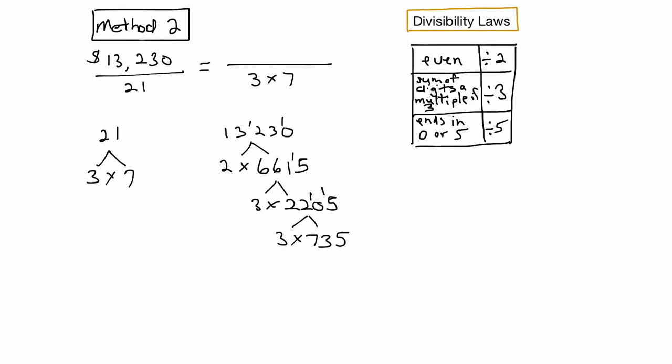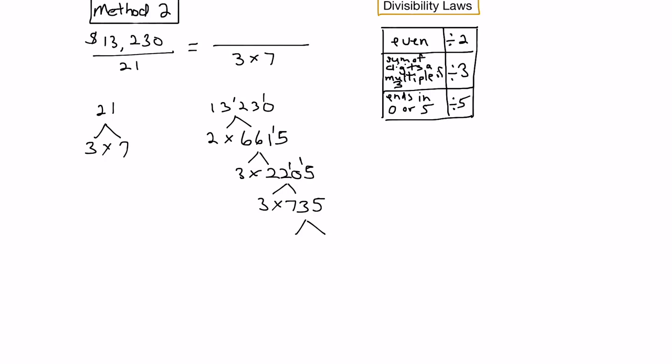We keep going and can break down 735 into 3 times some number. Is 735 even? No. Add the digits: 7 plus 3 is 10, plus 5 is 15. Is 15 a multiple of 3? Yes it is, so it's divisible by 3 again. We can write 3 times some number. 3 goes into 7 twice with 1 remainder, 3 goes into 13 four times with 1 remainder, and 3 into 15 goes 5 times, giving us 245.